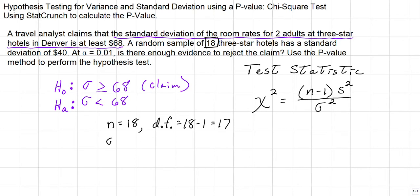We know that sigma will be 68, because that's what's given to us right here, and it is a standard deviation. And therefore, s, which is going to be our sample standard deviation, is going to come from the sample. It has a standard deviation of $40, so s is equal to 40. We're going to plug these three numbers into our formula, and then we will calculate.